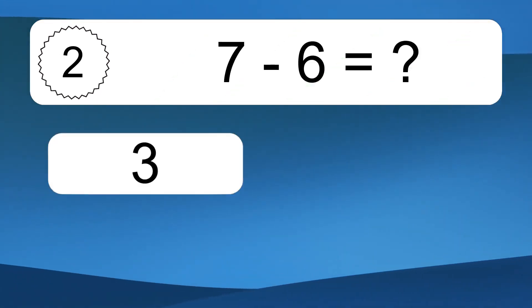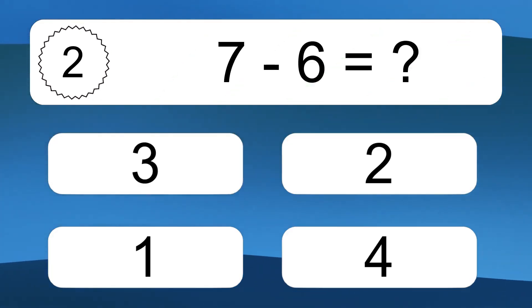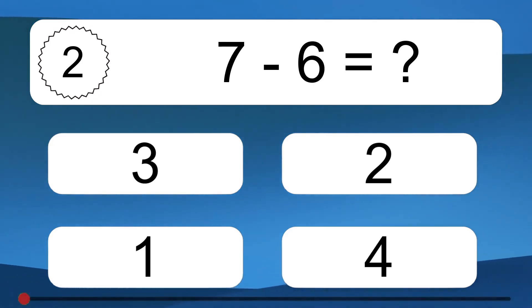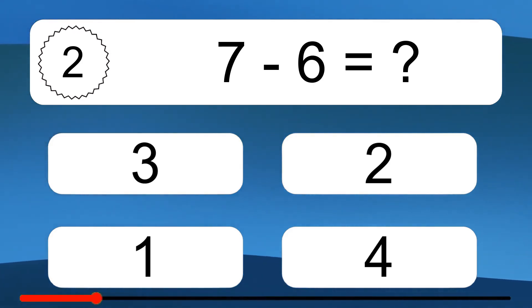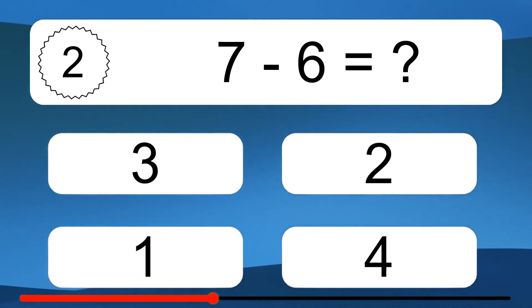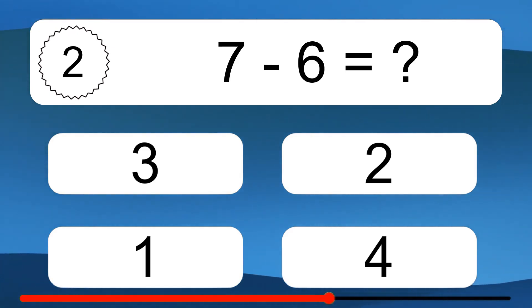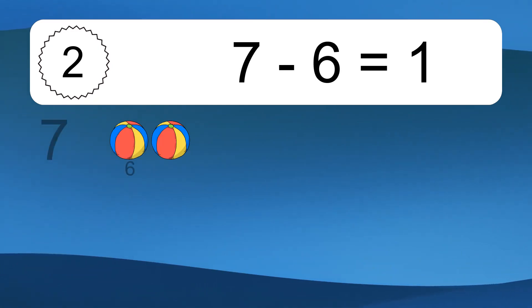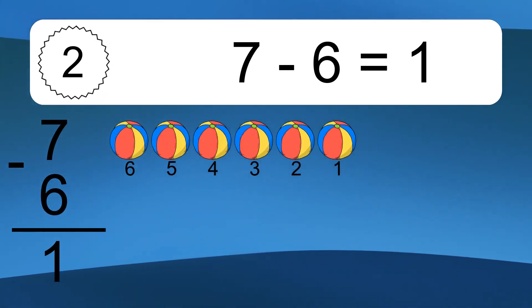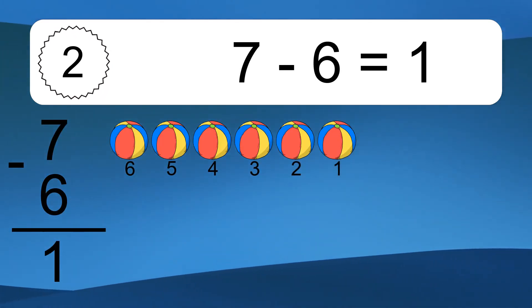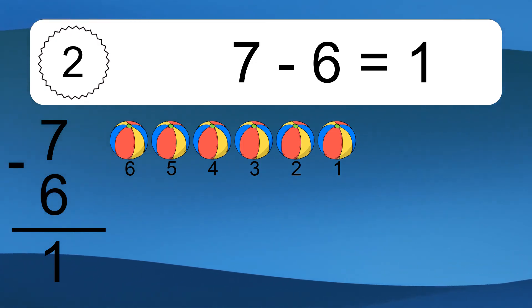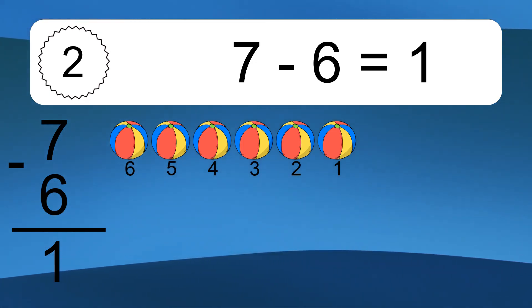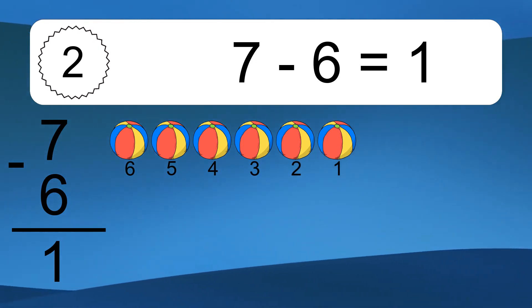7 minus 6 equals what? 7 minus 6 equals 1. Let's count it: 6, 5, 4, 3, 2, 1.